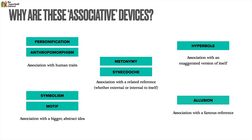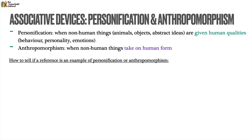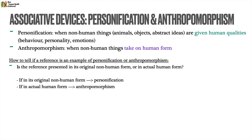Let's start with personification and anthropomorphism. Personification is when non-human things — including animals, objects, or even ideas — are given human qualities: behavior, actions, personality, emotions, etc. But anthropomorphism is slightly different — it's when non-human things take on human form and are literally presented as human beings. To tell them apart, ask: is the reference presented in its original non-human form, or in actual human form? If it's in its original non-human form but simply takes on human qualities, that's personification. If it shows up in actual human form, then you've got anthropomorphism.